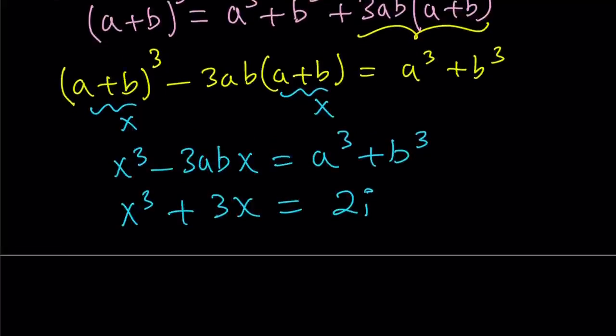Suppose a+b is equal to x, and then all the magic will happen, or should I say math magic. So if you do that, you're going to get x³ - 3abx equals a³ + b³.